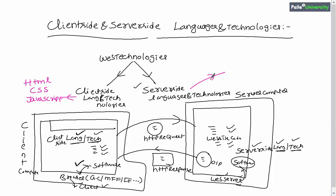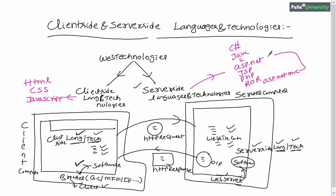There are many languages and technologies that fall under the server-side list. Some of the server-side languages are C# and Java. Apart from these, there are technologies like ASP.NET, JSP, PHP, Ruby on Rails, and ASP.NET MVC. Though ASP.NET MVC is an extension of ASP.NET, it is also considered a separate server-side technology.